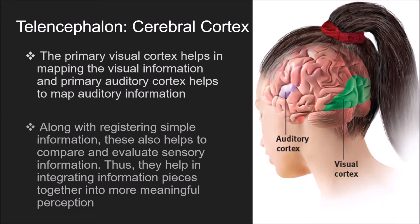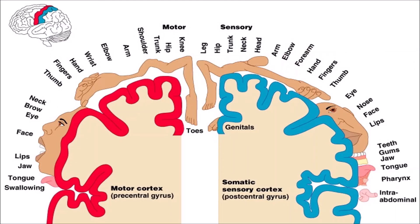The primary visual cortex helps in mapping visual information, and the primary auditory cortex helps to map auditory information. Along with registering simple information, these also help to compare and evaluate sensory information, integrating information pieces together into more meaningful perception. Since the cortex receives sensory information, it integrates it and sends out motor responses, functioning as an integration center.